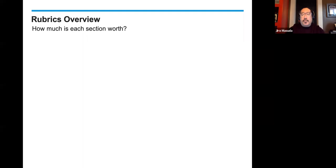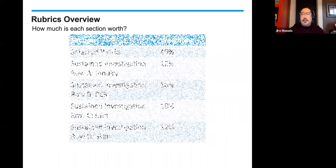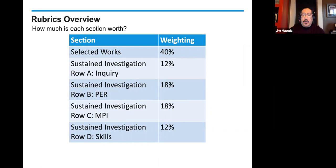In terms of the rubric for the entire portfolio, here is the breakdown in terms of weighting. Selected works is 40% of the total score. And then each of those four areas — sustained investigation inquiry, sustained investigation practice/experimentation/revision, sustained investigation MPI, and sustained investigation skills — are all weighted slightly differently.